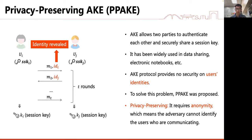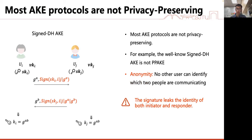Thus, the concept of privacy-preserving AKE is proposed. It requires anonymity, which means the adversary cannot identify the users who are communicating. Most AKE protocols are not privacy-preserving. For example, the well-known SIGNED-DH protocol is not PPAKE. In SIGNED-DH, each party uses a Diffie-Hellman key exchange to agree on a key and uses signatures to authenticate each other. The signature links the identity of both initiator and responder.